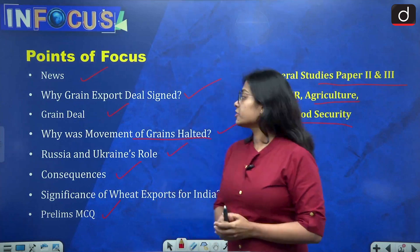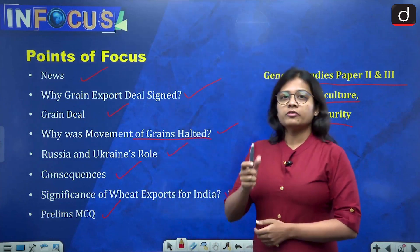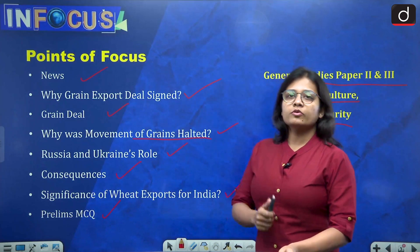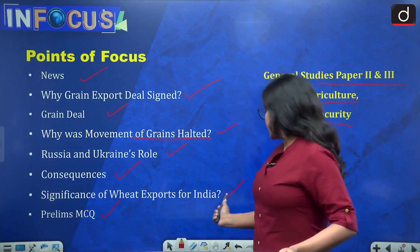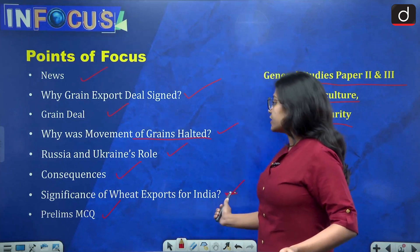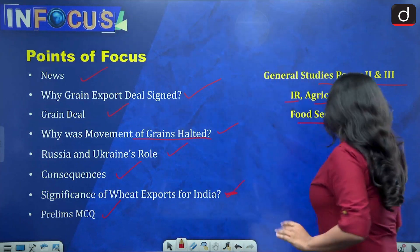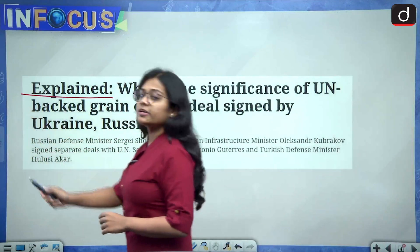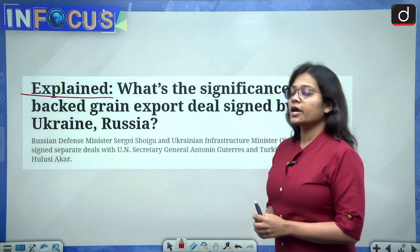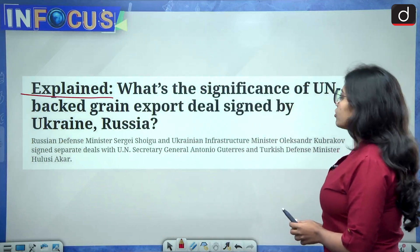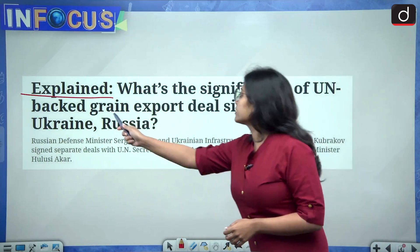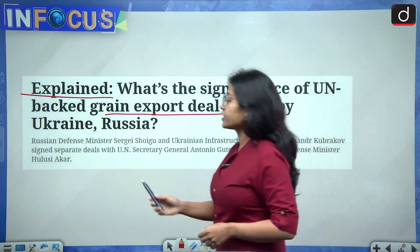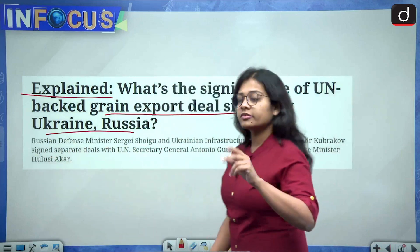From an exam perspective, it is important to know the reasons for the war and what are the consequences, or what will be the role of India in it. So let's see the news. This news has been taken from the Explained section of Indian Express and it asks: what's the significance of the United Nations-backed grain export deal signed by Russia and Ukraine? So there are two components in this.